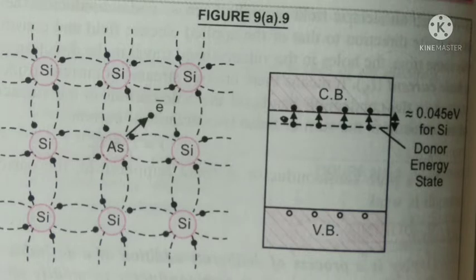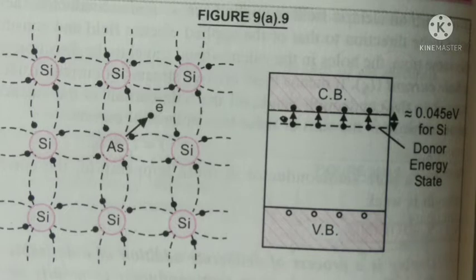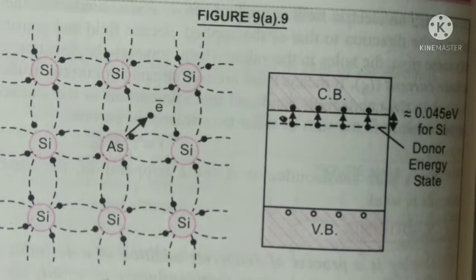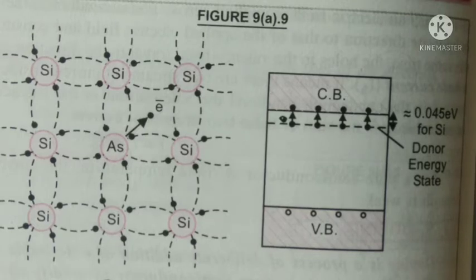But at room temperature, some of the covalent bonds may get broken up due to the free electrons acquiring a certain amount of energy. And as one covalent bond is broken, one electron is free and one hole is produced.